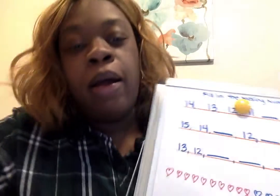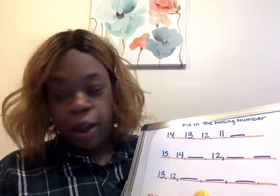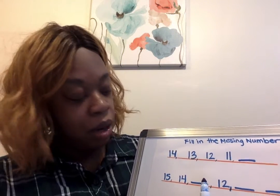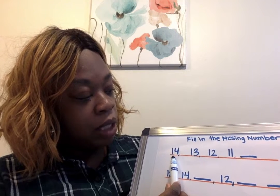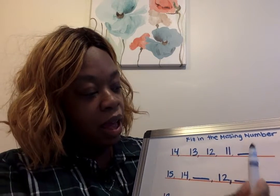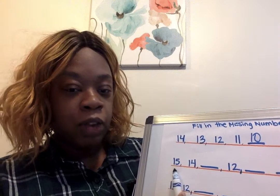Now moving on, we are going to use those numbers you just practiced and put them into the linear configuration. We're starting with number 14 and we're going to count down to figure out what number is missing. We have 14, 13, 12, 11, and 10.